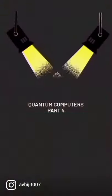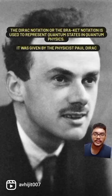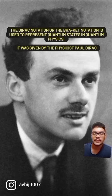Wonder Computers Part 4: The Dirac Notation. The Dirac Notation or the Bra-Ket Notation is used to represent quantum states in quantum physics. It was given by the physicist Paul Dirac.